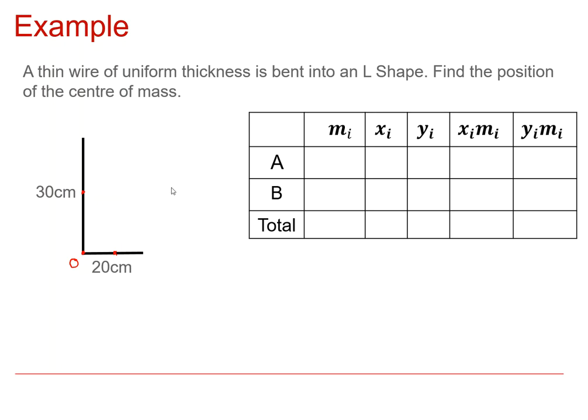So for shape A, we'll call this one A, and we'll call this one B. Mass of shape A is 20k. The x-coordinate of the centre of mass of shape A is 10, and the y-coordinate is 0. And then for shape B, mass is 30k. The x-coordinate of its centre of mass is 0, and the y-coordinate is 15.